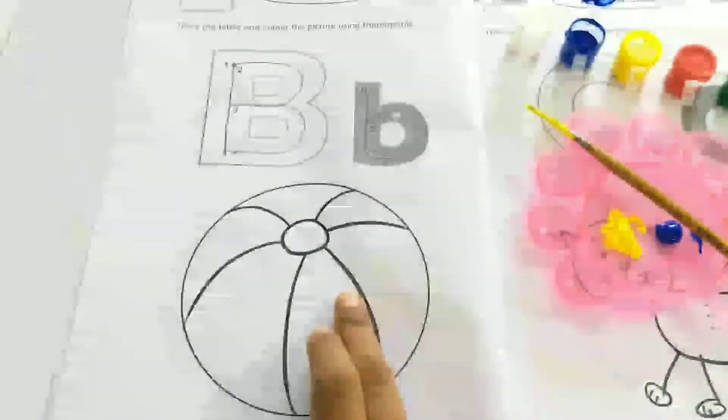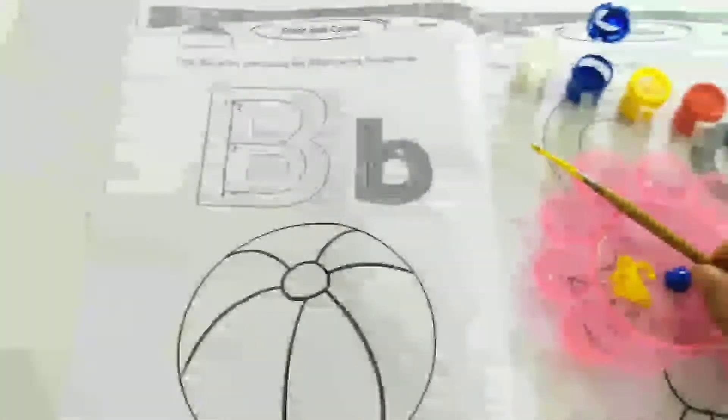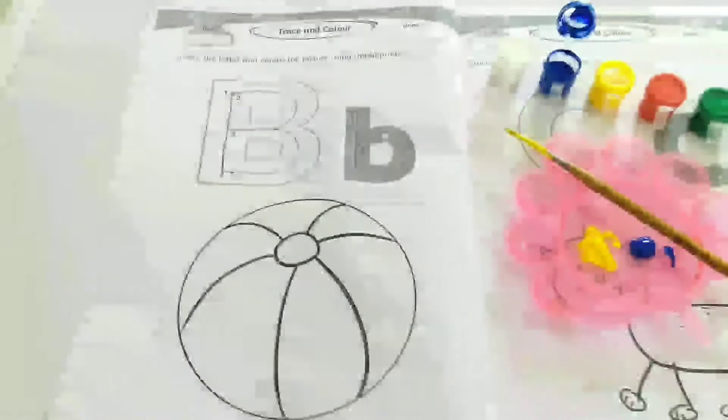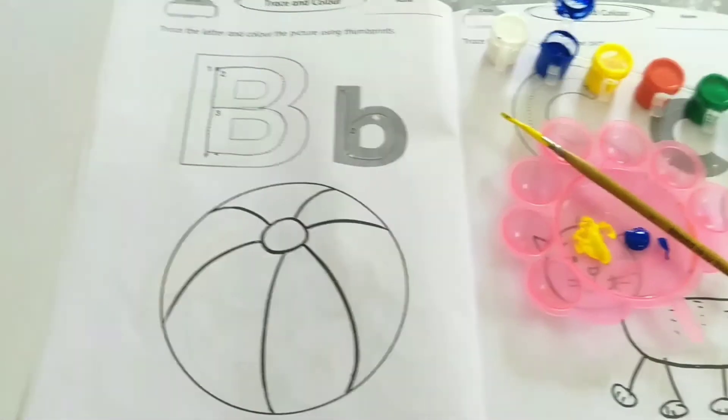Now, color the picture using thumbprint. We will color the ball using thumbprint. I use yellow and blue color. You can choose any color.